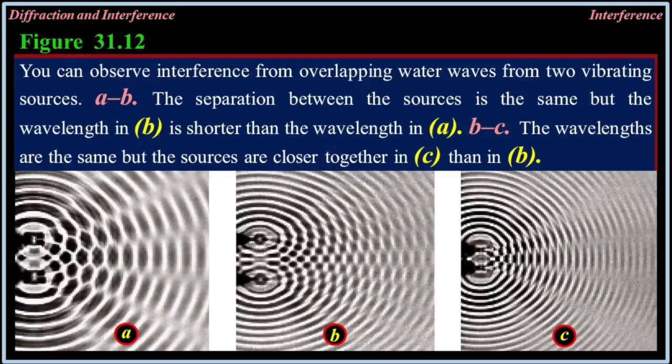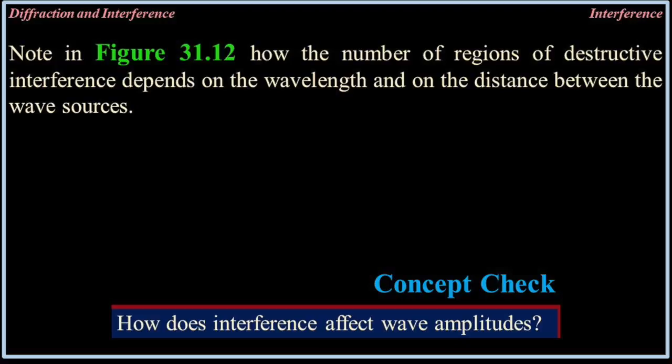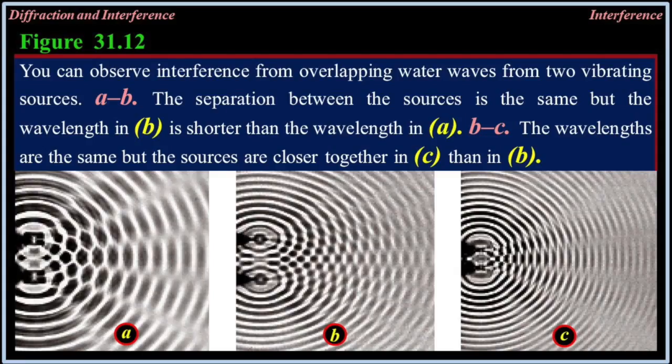Concept check: How does interference affect wave amplitudes? Figure 31.12: You can observe interference from overlapping water waves from two vibrating sources. The separation between the sources is the same in A and B, but the wavelength in B is shorter than in A. In C, the wavelengths are the same as in B, but the sources are closer together.